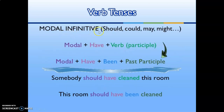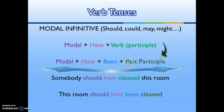For modal infinitive, the modals include: should, could, may, might. The rule is modal plus 'have' plus verb participle (active), and modal plus 'have' plus 'been' plus past participle (passive). Example: 'Somebody should have cleaned this room.' In passive: 'This room should have been cleaned.'